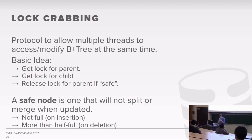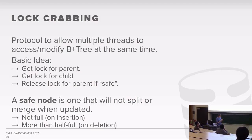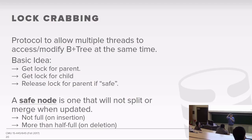We need something specifically designed for B+ trees that maximizes concurrency. The technique is called lock crabbing or latch crabbing. As we traverse the tree, we acquire latches on the way down—holding the parent's latch before acquiring the child's latch, then traversing down to the child. We then check whether the current node is safe: meaning it would not require a split or merge. If it's safe, we can release the latch on the parent above us and keep traversing down.